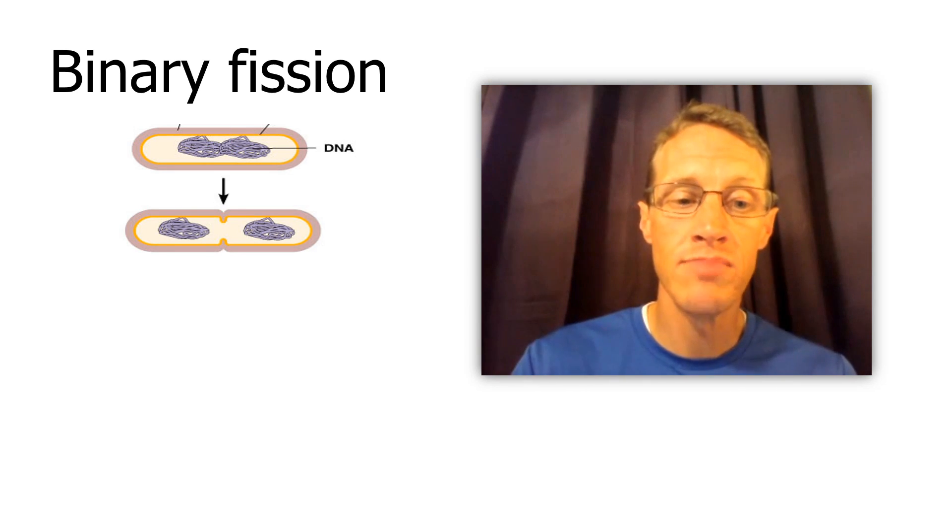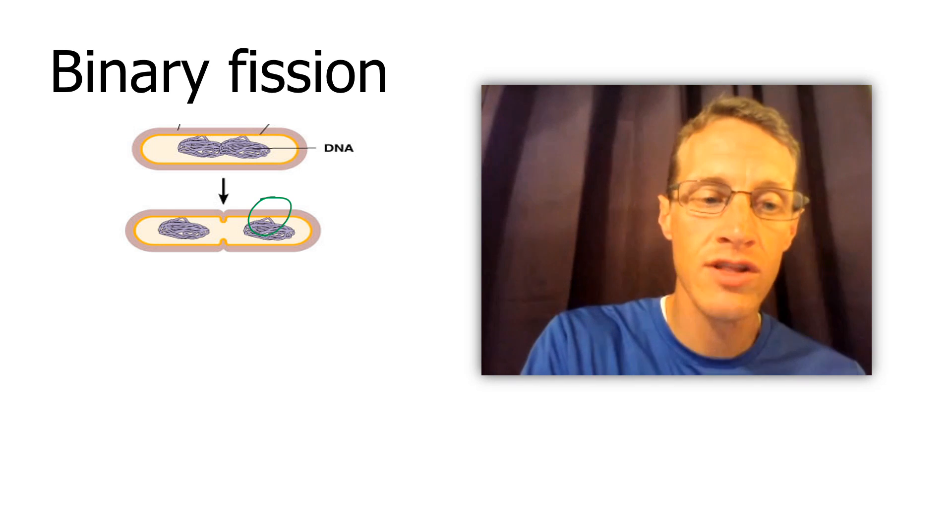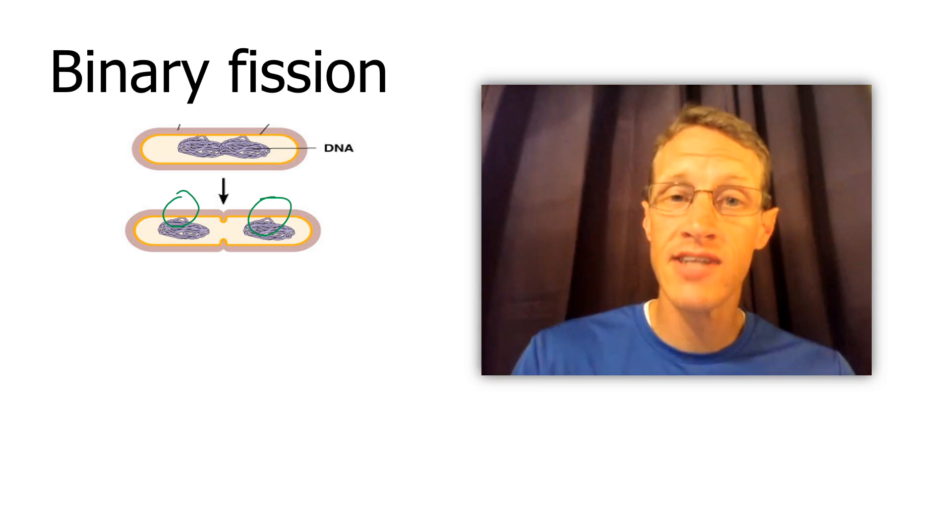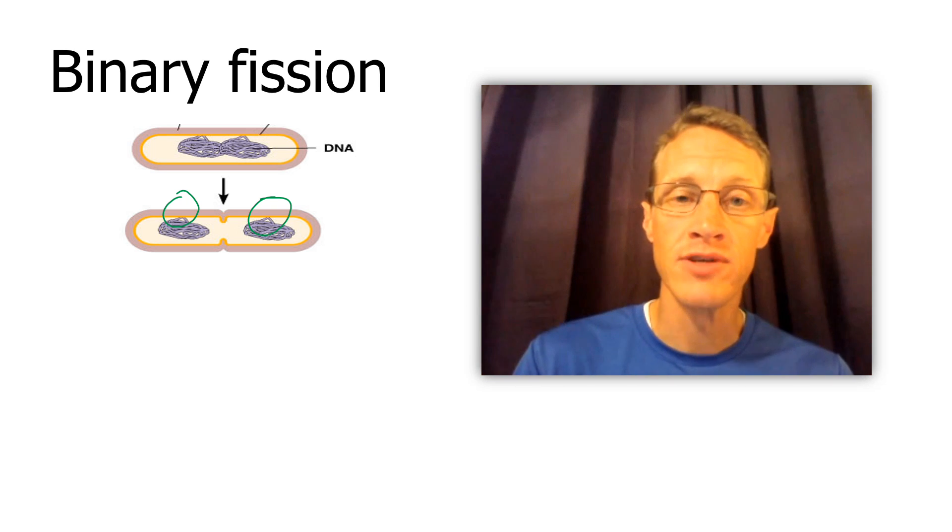In our second step, the membrane grows. And because those two copies were attached to the membrane at different points, the copies get pulled apart. So this kind of does the job of those spindle fibers. The membrane grows, allowing the copies to separate. Once there's enough space between them, the cell simply begins to divide.